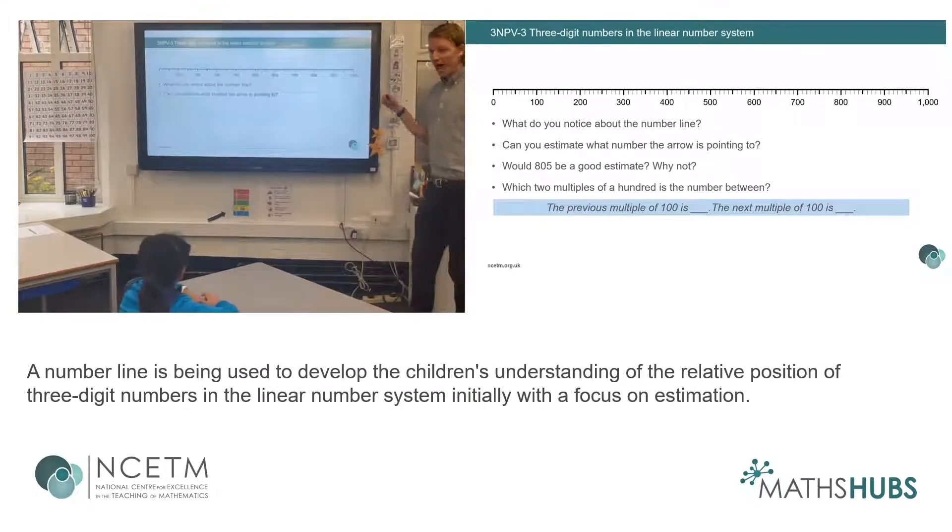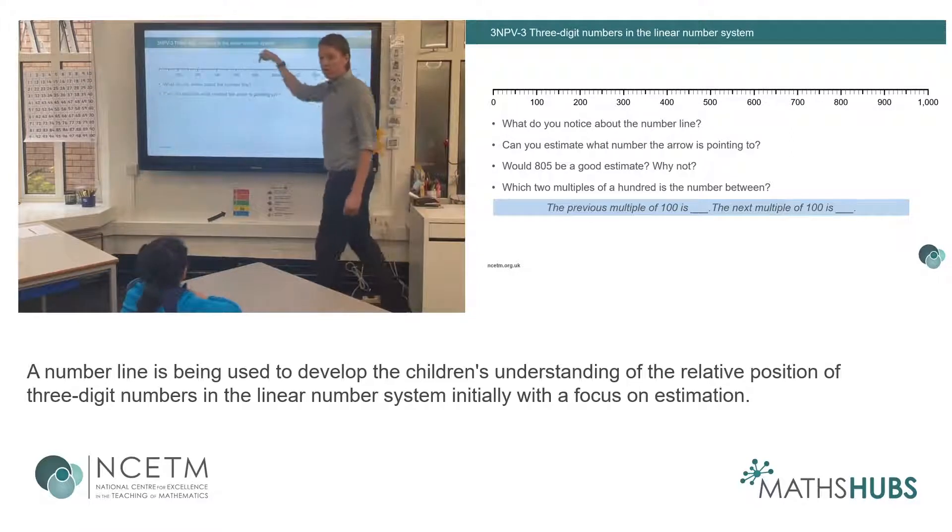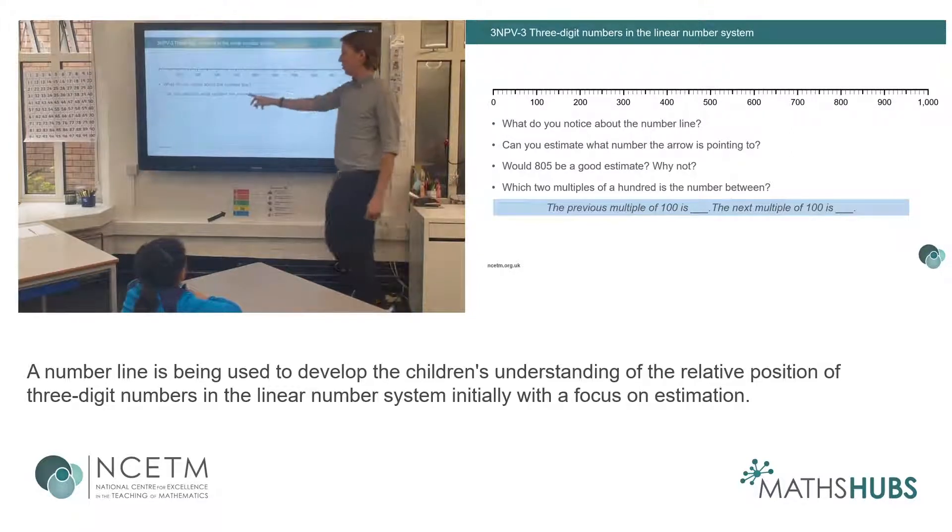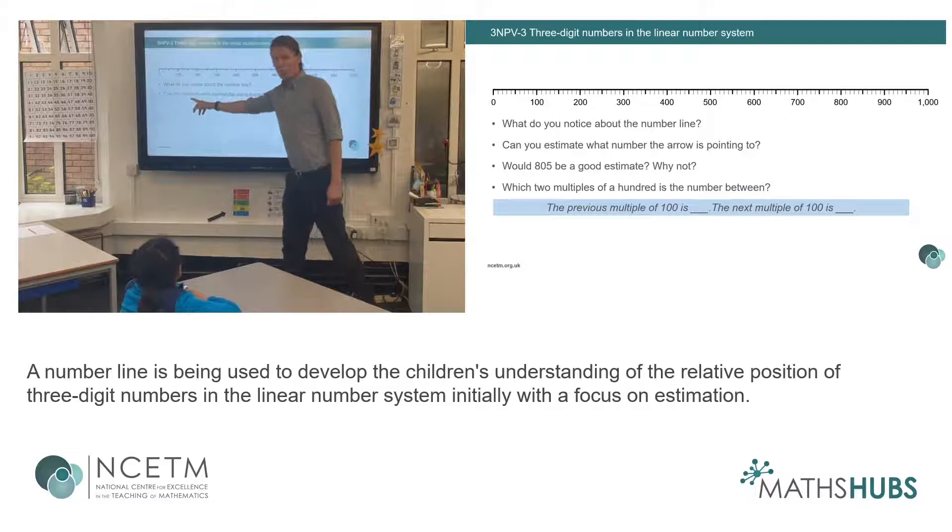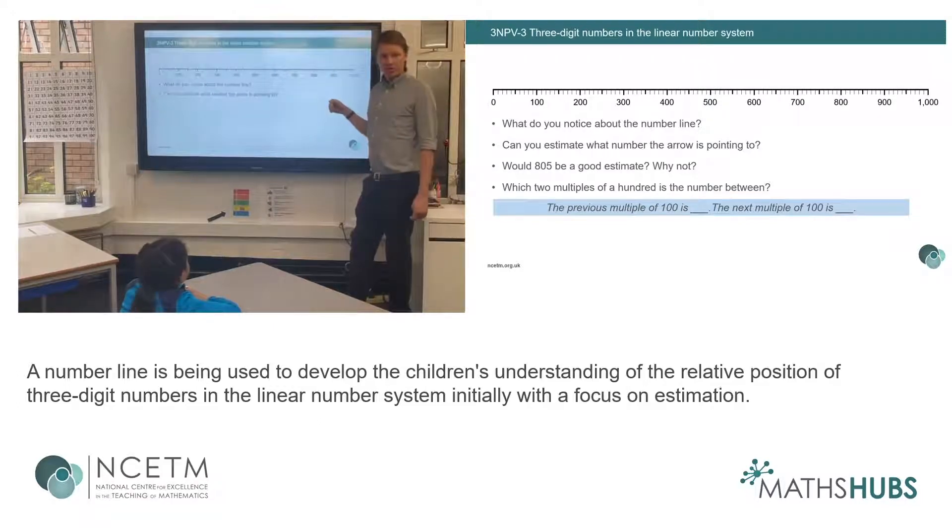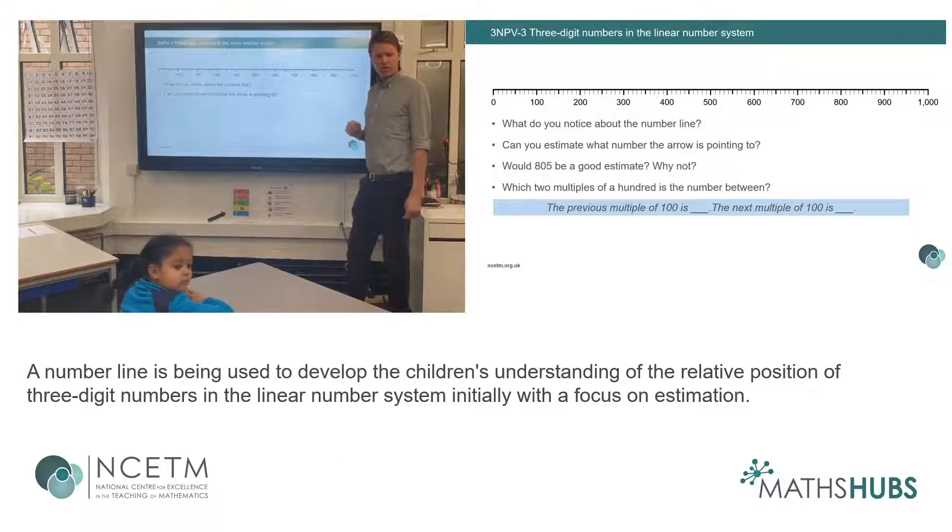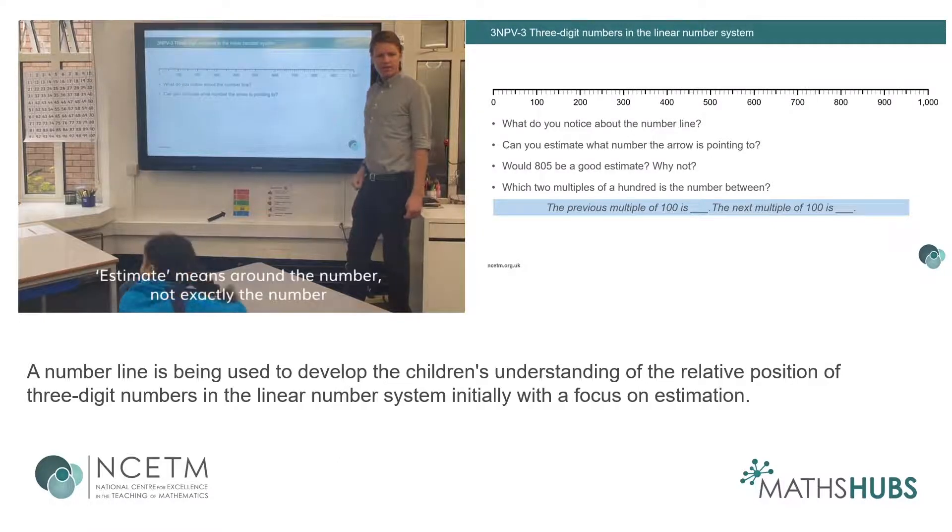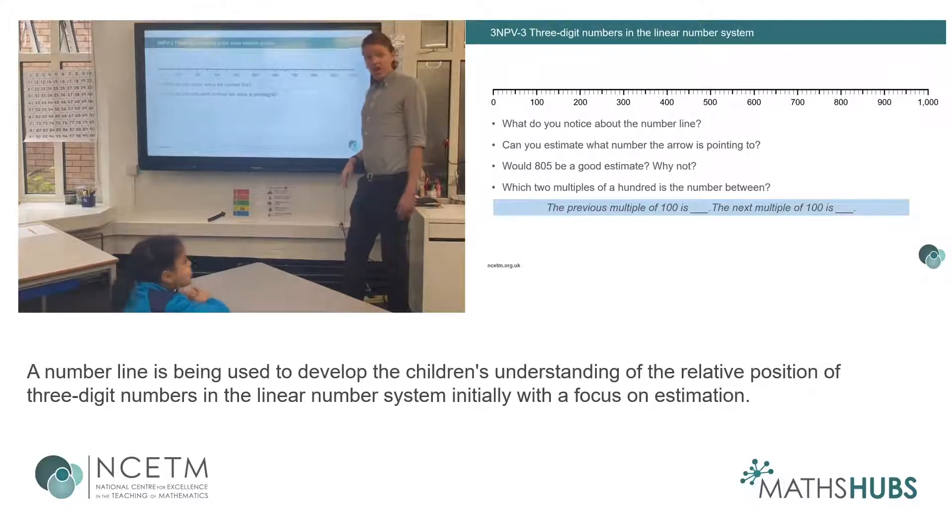Let me show you an arrow somewhere on this number line. I want you to estimate where the arrow is pointing to. What does estimate mean? Estimate means around the number, not exactly. So sometimes you can give an exact number, but if you're estimating, you might give me some reasoning. You might say why you think that.